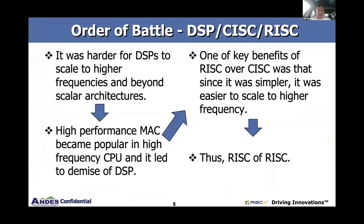In the 2000s we started chasing gigahertz. Our original IBM PC was 4.77 megahertz; today we have PCs running about 5 gigahertz — up a thousand times in my career. CISC and DSP were getting harder and harder to scale to higher frequency, and CISC processors started incorporating MAC, multiply accumulator units, in the CPU. DSP ultimately lost the war from frequency, complexity, and CPU getting more performance.